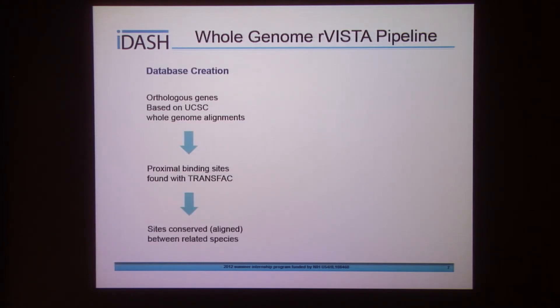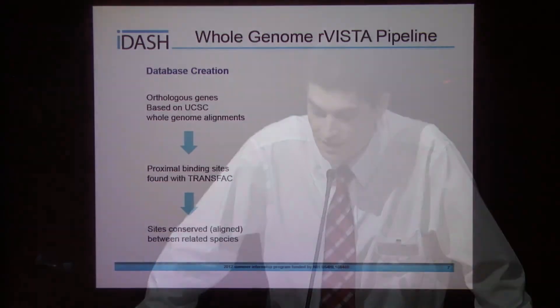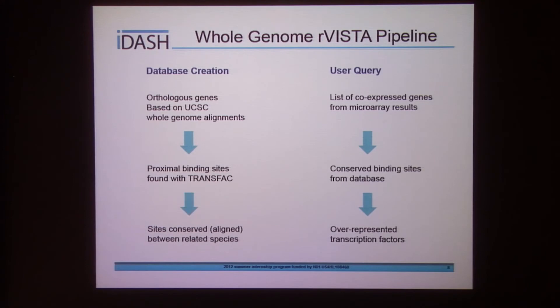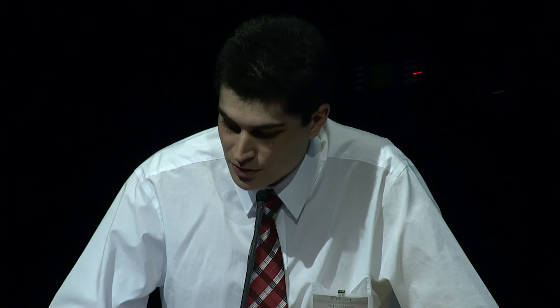Whole Genome R-Vista is a tool that can automate this process for us. Before the user ever sees anything, a database is pre-computed of transcription factor binding sites. That's done by getting orthologous genes based on whole genome alignments, looking at the proximal promoter regions of all those genes, and searching for transcription factors with the TransFact database. Only those transcription factors that are conserved between related species are kept in the database. The user then comes along with their gene list from their microarray experiment, the database is queried for those binding sites connected to those genes, and a statistical test is performed to find out which transcription factors are overrepresented in the user's gene list.